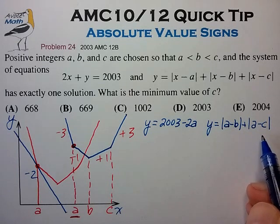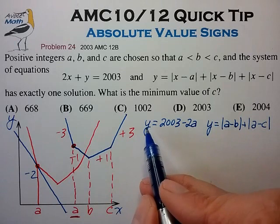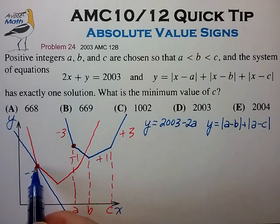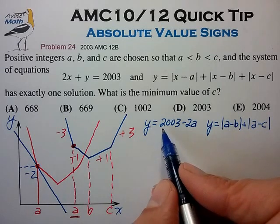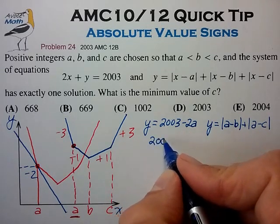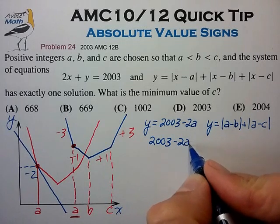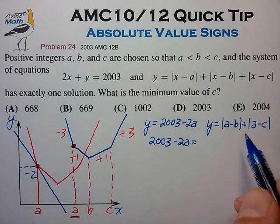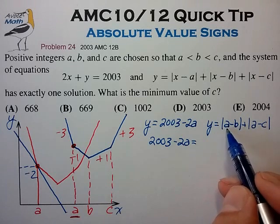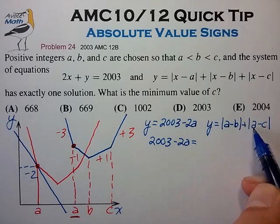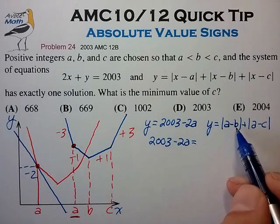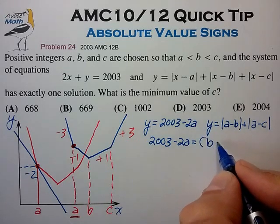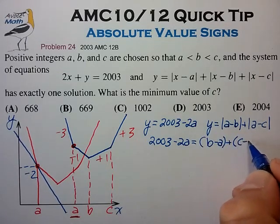So now we can reduce this somewhat to find that when we equate the y coordinate for this common intersection point, we can equate 2003 minus 2a with this absolute equation form where we know that b is greater than a and c is greater than a, such that we can reduce this now to the form b minus a plus c minus a.